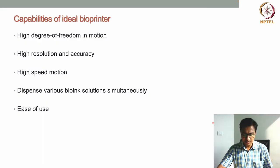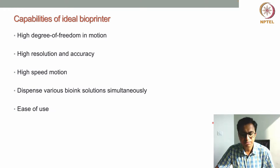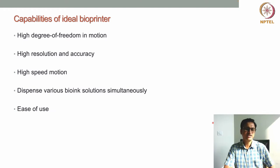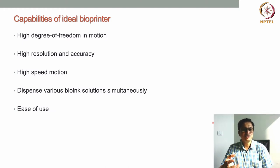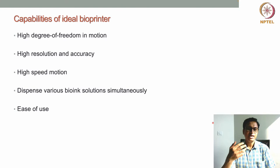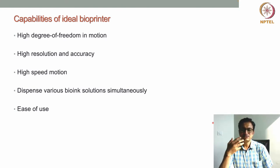At this stage, you probably have a better idea of what are the different types of bioprinting technologies available and what are the capabilities of all these different types of bioprinting technologies or bioprinters. Now let us discuss what should be the capabilities of an ideal bioprinter — what are the things that a bioprinter should have so that it can be used for any application.